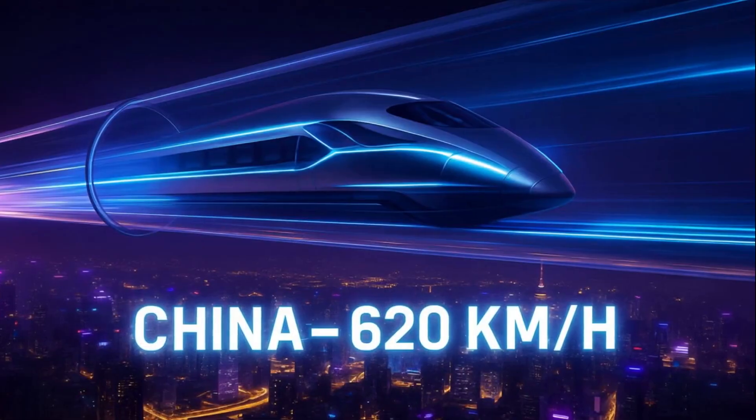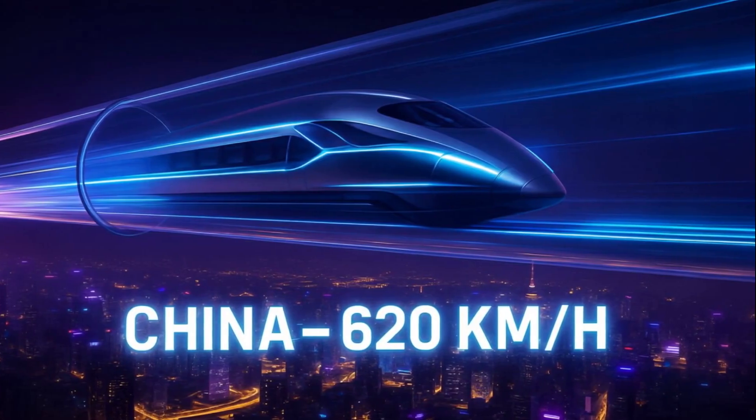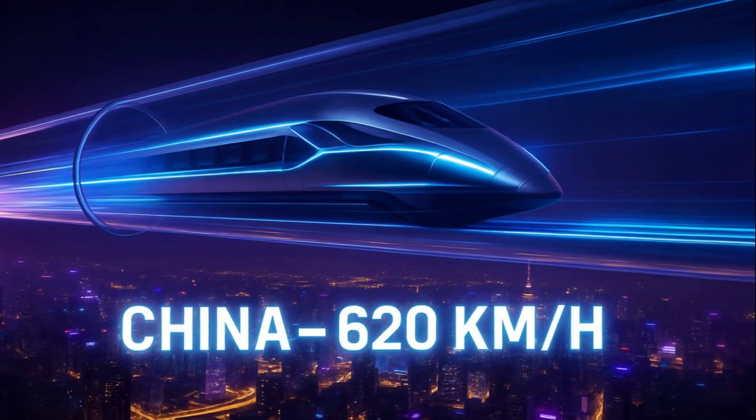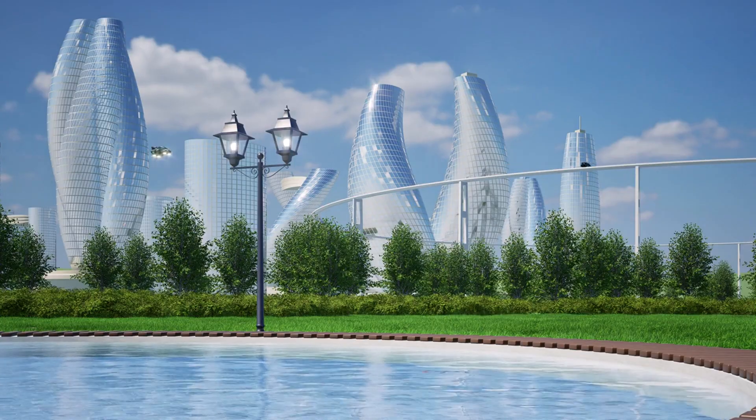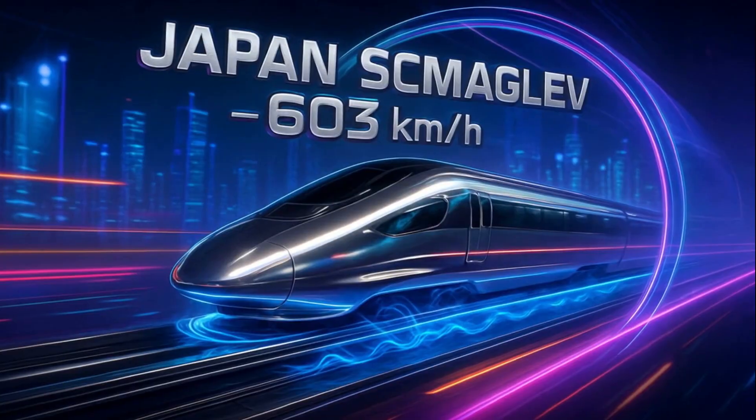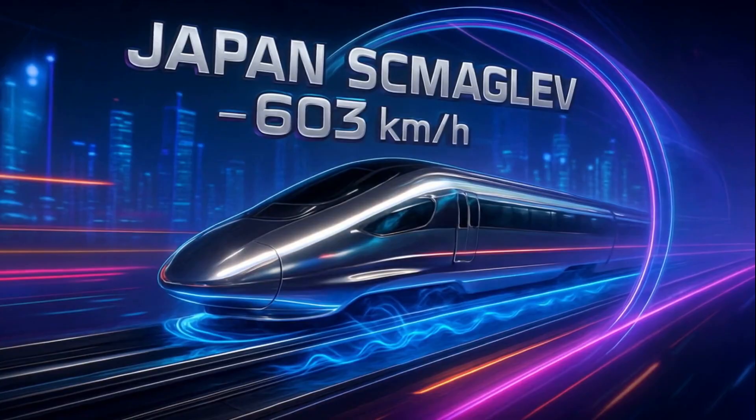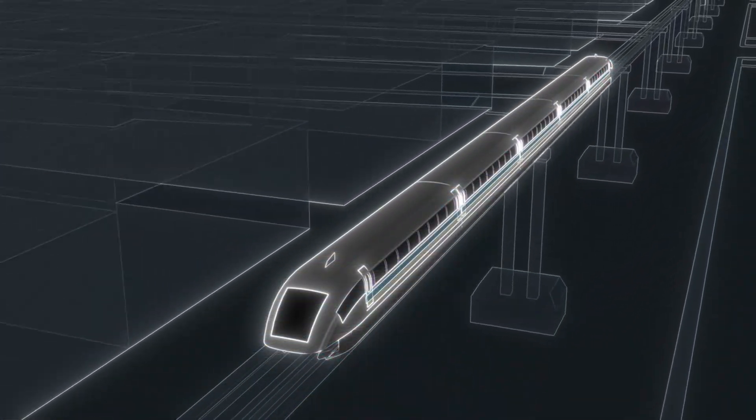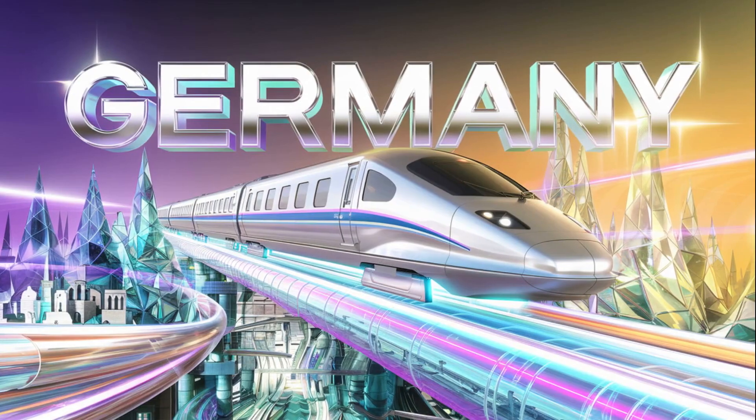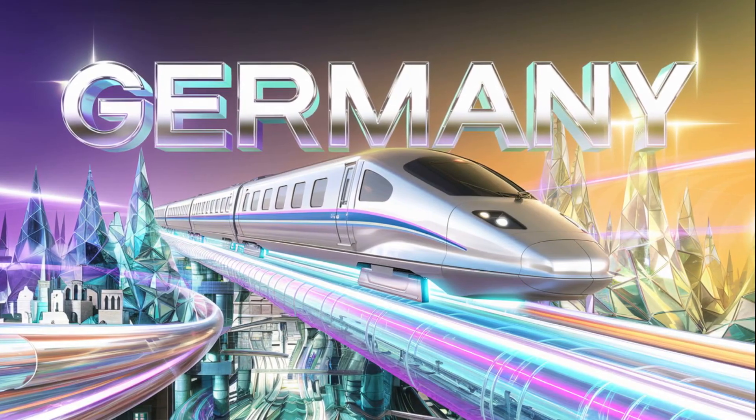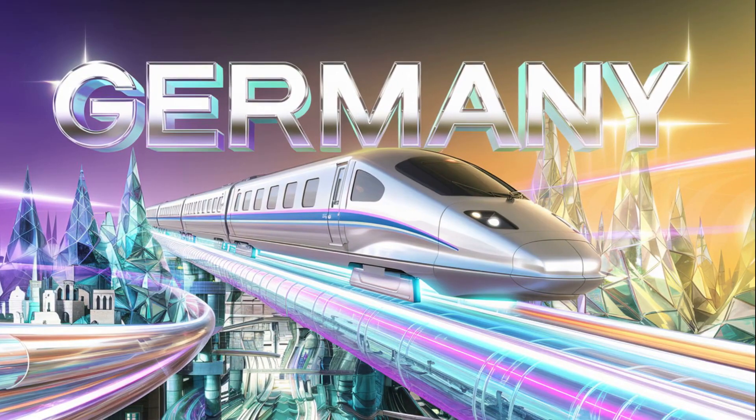On the other hand, China leads the pack with jaw-dropping prototypes, including a 620 kilometers per hour vacuum maglev already on test tracks and a classified mega network linking megacities in under an hour. Japan follows with its iconic SC Maglev, which hits 603 kilometers per hour using superconducting magnets and now eyes vacuum integration for intercity transit. Germany, the birthplace of maglev, is quietly reviving its trans-rapid tech with futuristic upgrades, including European-wide vacuum rail corridors.